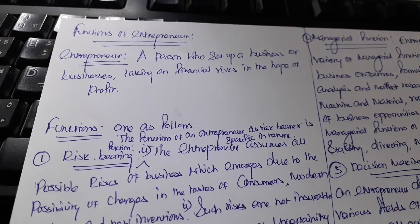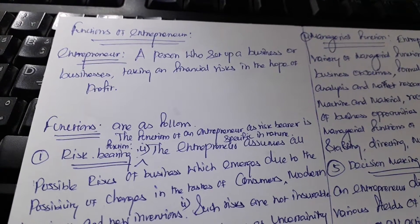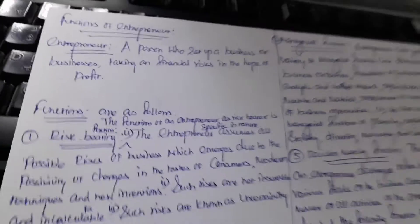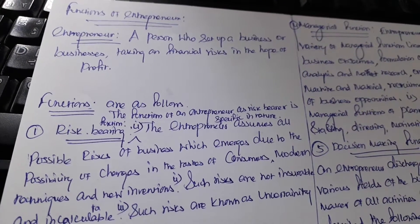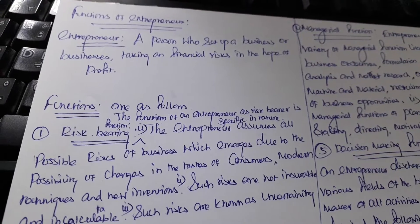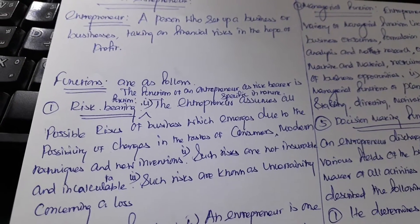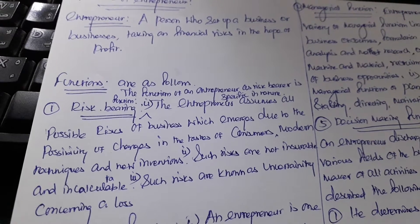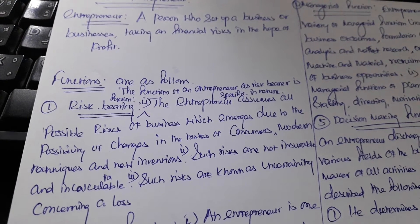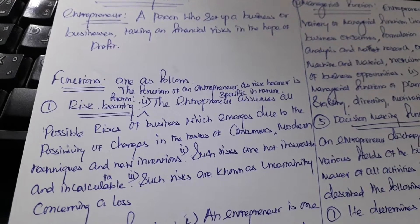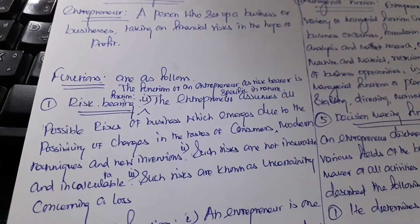The following functions are performed by the entrepreneur. The first one is the risk-bearing function. The function of an entrepreneur as a risk-bearer is specific in nature. The entrepreneur assumes all possible risks of a business which emerge due to the possibility of changes in the taste of consumers, modern techniques and new inventions.